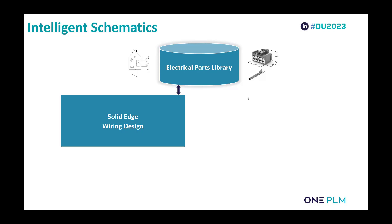The key part of this intelligent solution is the integrated managed electrical parts library. On the left hand side we've got the schematic symbol; on the right hand side we've got the mechanical component. Effectively both are exactly the same component — in the mechanical world it's positioned in space, while on the schematic side it may be spread over multiple sheets. As a change is made to one, it needs to be reflected in the other. Let's have a look at how this works.